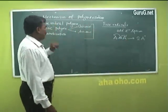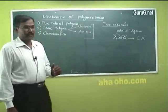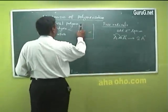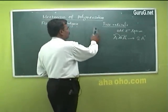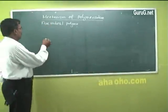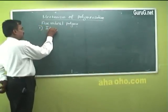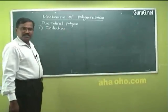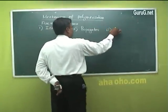In free radical polymerization, the chain is carried out with the help of free radicals. This free radical polymerization takes place through three steps: the first one is the initiation step, the second one is the propagation step, and the third one is the termination step.